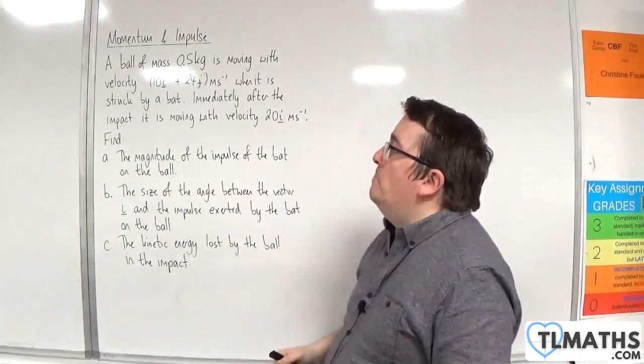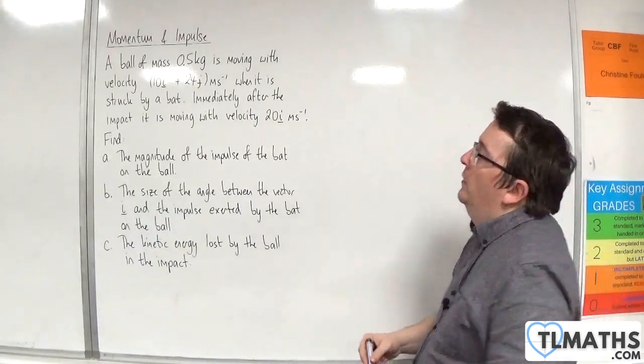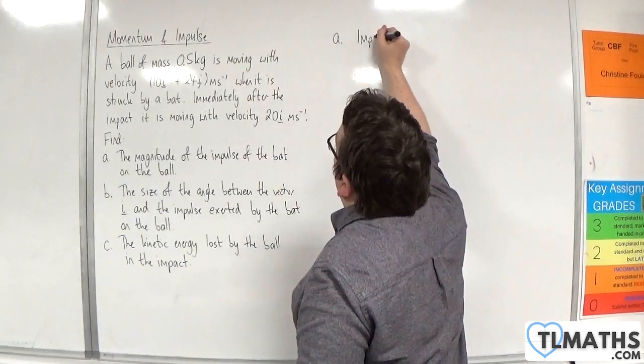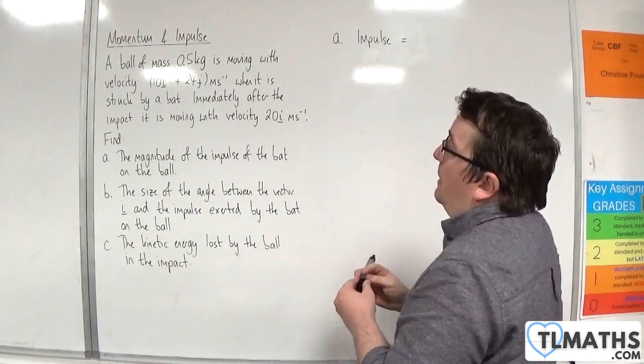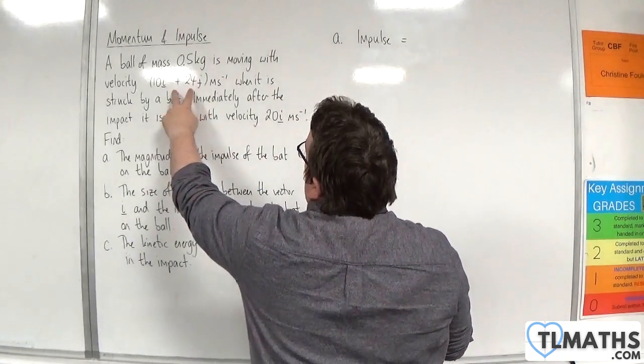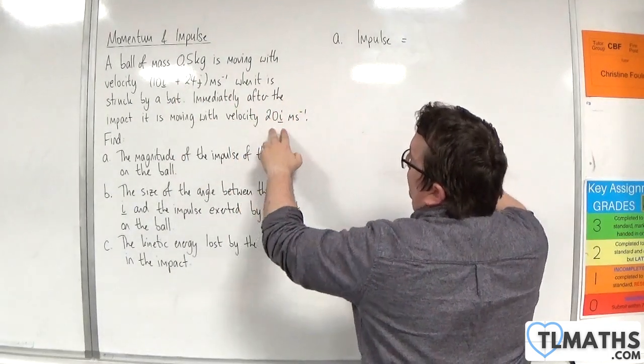Find part A, the magnitude of the impulse of the bat on the ball. So for part A the impulse is the change in momentum. So it is moving with this velocity initially and it finishes up with this velocity.